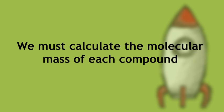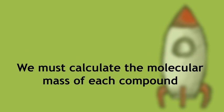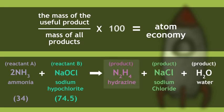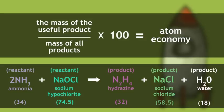Firstly, we must calculate the molecular mass of each compound. N2H4 has a molecular mass of 32, sodium chloride, 58.5, and water, H2O, 18. First, we need to identify our useful product. This is hydrazine, N2H4. It has a mass of 32.